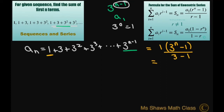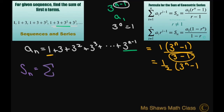The denominator is 2, so this simplifies to one half times (3 to the power of n minus 1). Now we're going to find the sum of the first n terms. S sub n equals the sum — changing n to k — from k equals 1 to n of one half times 3 to the power of k minus 1.